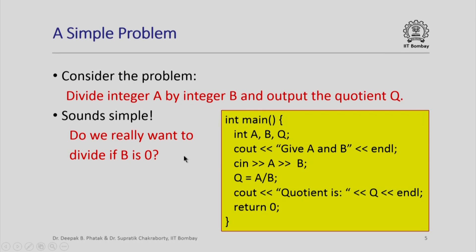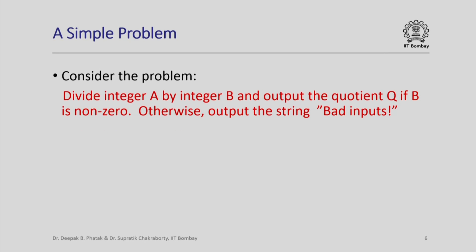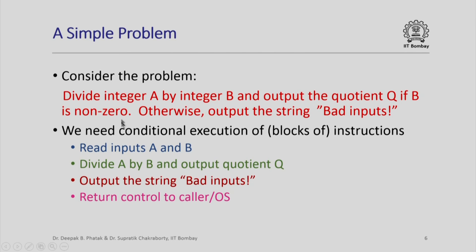Do we really want to divide if b is 0? If we want to avoid dividing when b is 0, we need to reformulate our problem: divide a by b and output the quotient q if b is non-zero; otherwise, if b is 0, simply output the string "bad inputs", because dividing by 0 is not a well-defined operation. As you can see, we need conditional execution of instructions in order to solve even a simple problem like this.